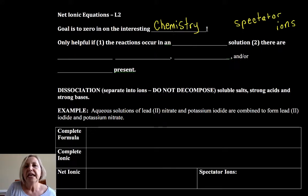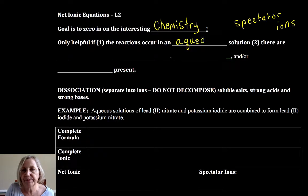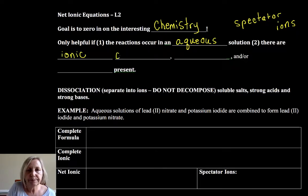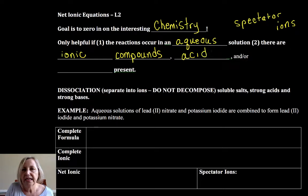So in order to do a net ionic equation what has to be present in the mixture is it first has to be an aqueous solution. It's typically not going to be used for example for a synthesis or a decomposition. You need an aqueous solution and we need ionic compounds, net ionic equations. We need acids and or bases.